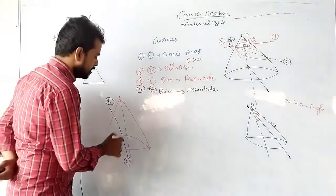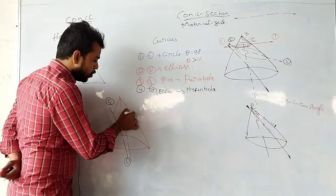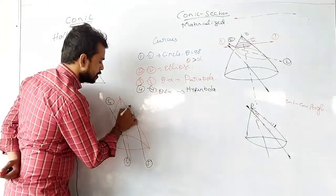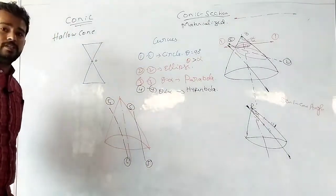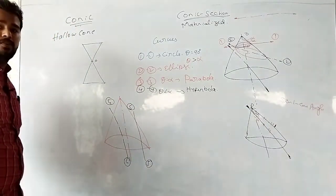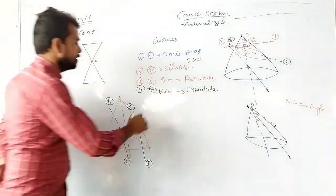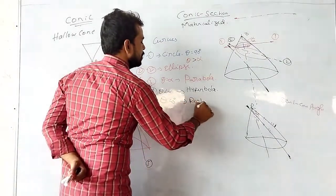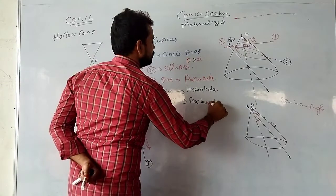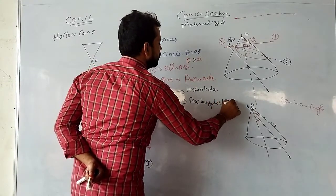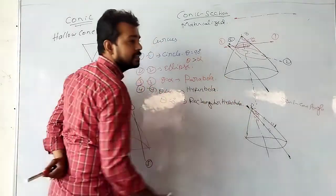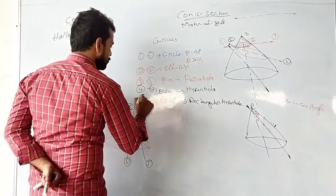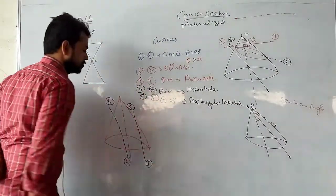Next, I cut the cone with a section plane which is parallel to the axis — theta equals 0. Then you get a rectangular hyperbola. This is section 5-5.